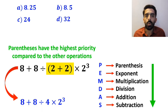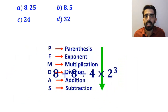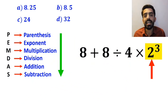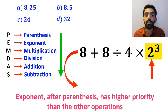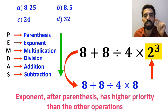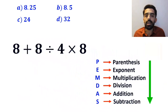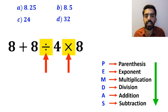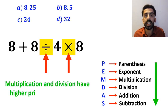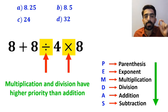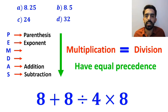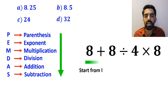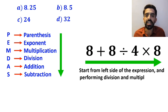Simplifying the parenthesis, we can write 8 plus 8 divided by 4 times 2 to the power of 3. In the next step, we go to the exponent, because after parenthesis, exponents have higher priority than the other operations. This simplifies to 8 plus 8 divided by 4 times 8. Now it's time to perform division and multiplication, since they have higher priority than addition. However, we must pay close attention that multiplication and division have equal precedence. In this case, the best thing to do is to start from the left side of the expression, performing division and multiplication as we go.